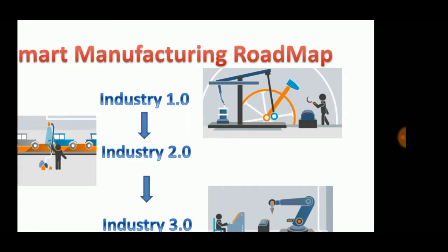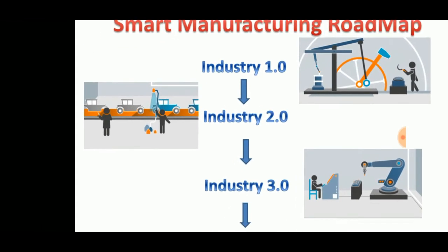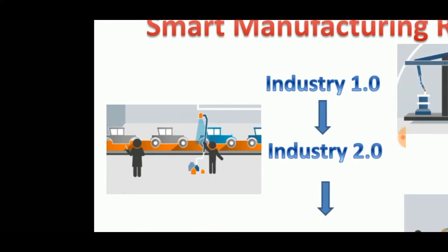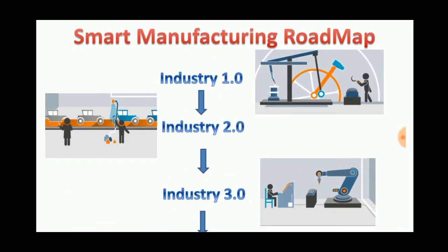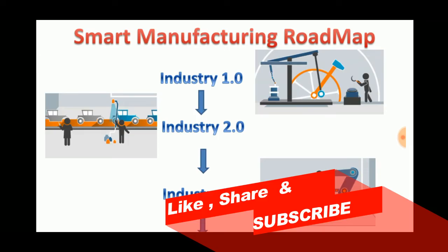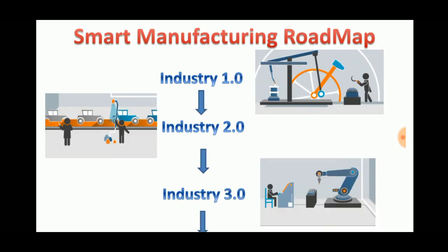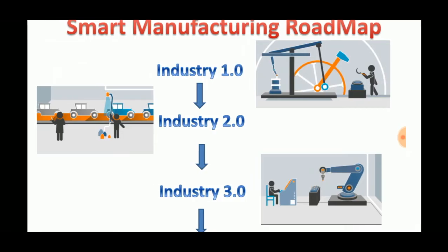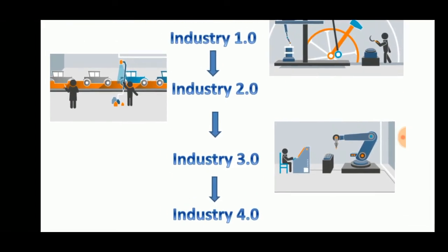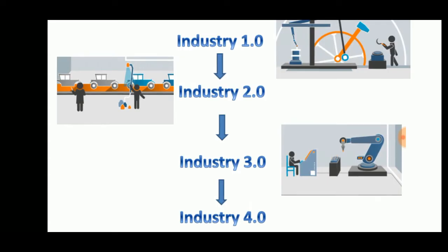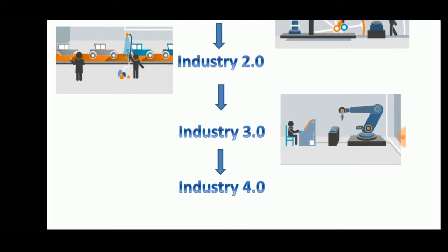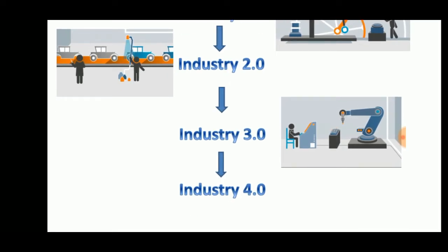Starting from Industry 1.0, in the olden days there were no advanced technologies, so people used mechanical and steam-powered systems to perform operations such as cutting. As industrial development grew after the 1900s, technologies such as hydraulics and pneumatics evolved. Then Industry 3.0 involved robotic systems where a person could handle a machine using a set of codes or programs.